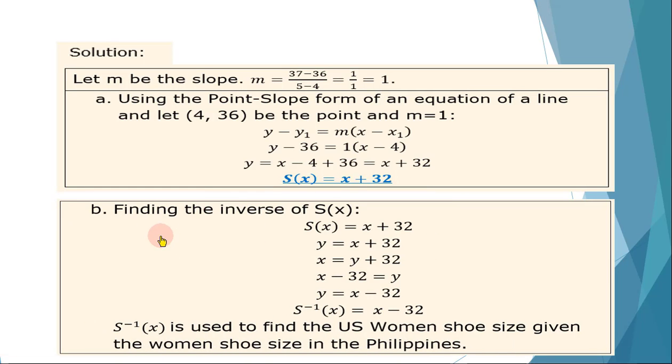Now finding the inverse of the given S(x). So simply copy, then express it in terms of Y, S(x) = Y, which is equal to X + 32. Then we interchange X and Y. Then we solve Y in terms of X. Y therefore is X - 32. And we rewrite S⁻¹(x) = X - 32. Now this inverse function of S(x) is used to find the US women's shoe size given the women's shoe size in the Philippines. Whereas this S(x) is actually the given the US size, and we have to convert it in the Philippines shoe size.